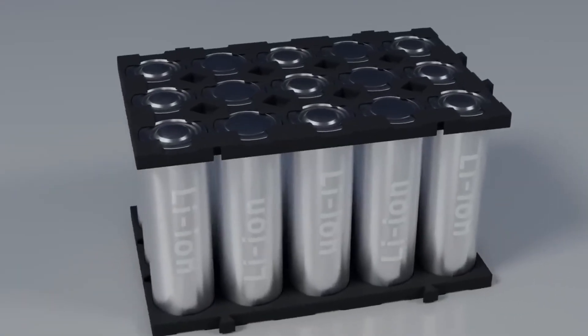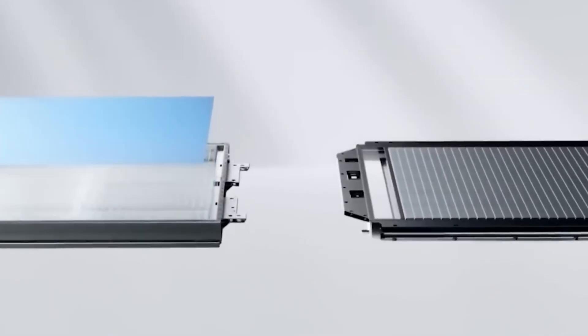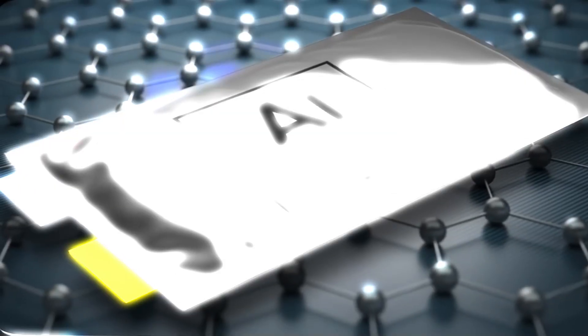First comes the self-healing electrode system. Tiny cracks, the kind that destroy lithium batteries over time, are repaired within seconds in aluminum cells.